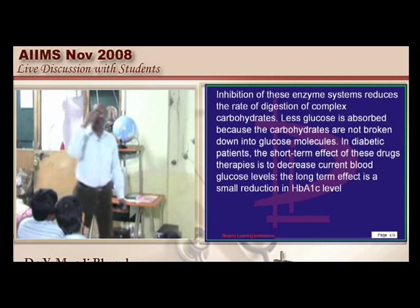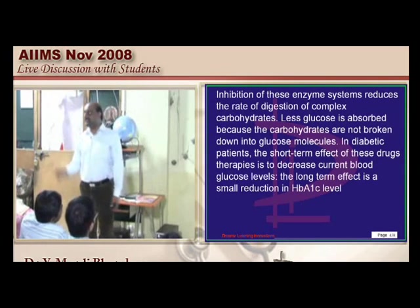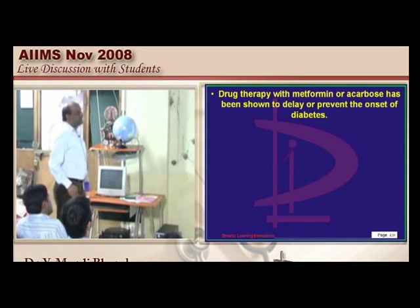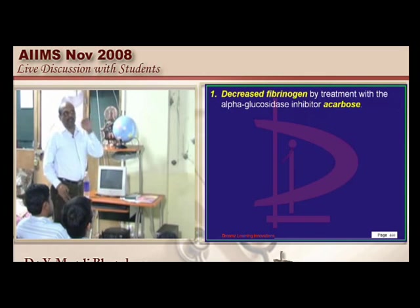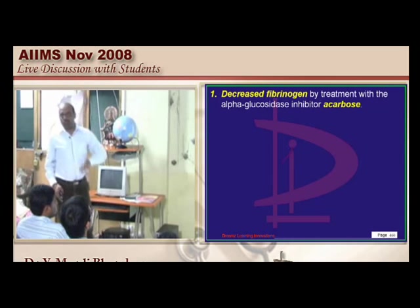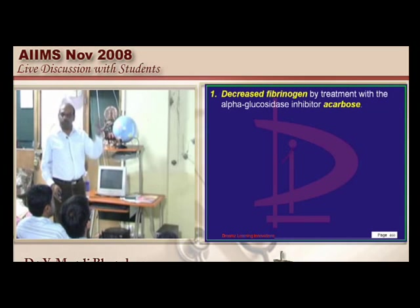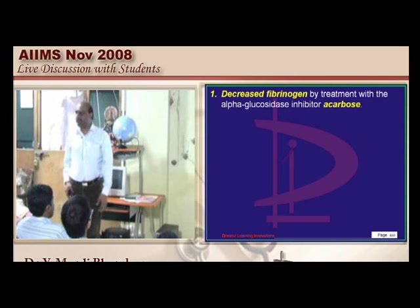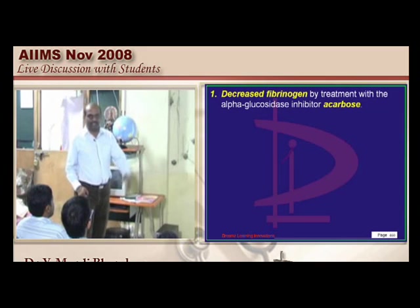Acarbose having low fibrinogen levels as an association is a true statement. It decreases intestinal absorption of glucose and also retards the progression of a glucose-intolerant state into florid diabetes. It has more to do with postprandial glucose levels, but if you take acarbose at night, morning fasting values also have relevance.